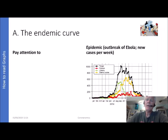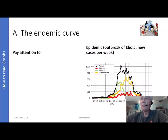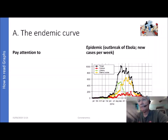This is an epidemic curve showing the outbreak of Ebola. It shows new cases per week. In black we have the total; in red, Guinea; in green, Liberia; in yellow, Sierra Leone. You can see the timing and impact follow different patterns. There is a follow-up wave and an overall total picture.